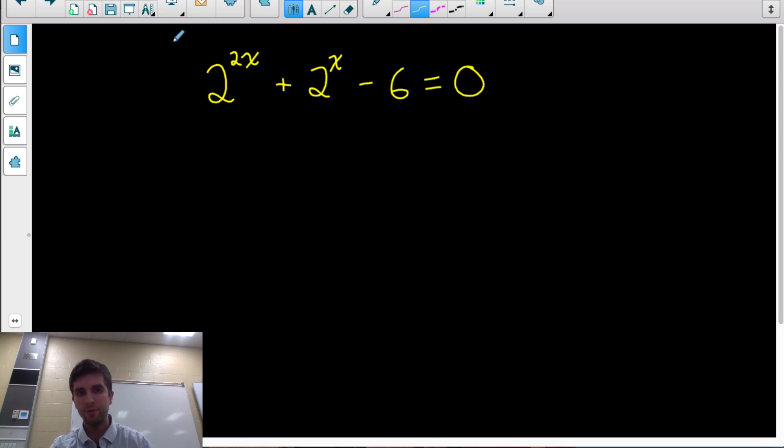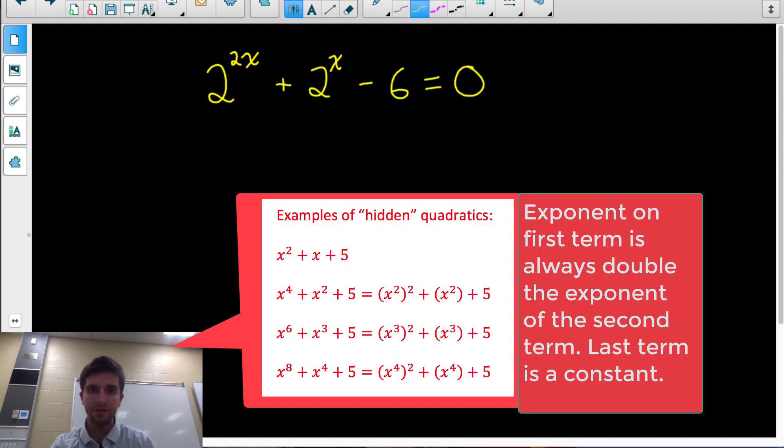Anytime you have a trinomial where the exponent on the first term is double the exponent of the second term, and the third term is a constant, we could actually think of this as like a hidden quadratic type of equation.